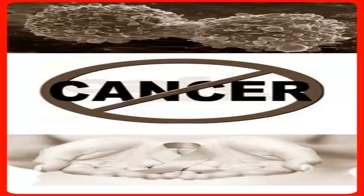Usually, repair genes provide for repairing the damage. Sometimes that protection system does not work. The genes that control cell division then develop errors. When a number of errors accumulate in the same cell, that cell divides unchecked. The result is cancer.